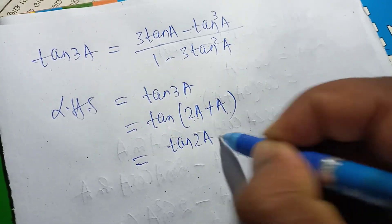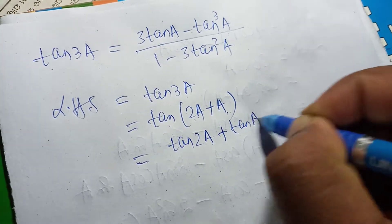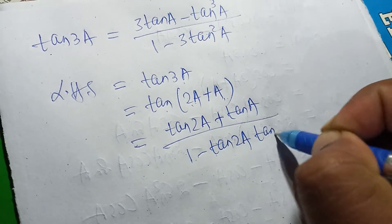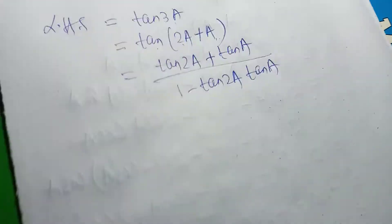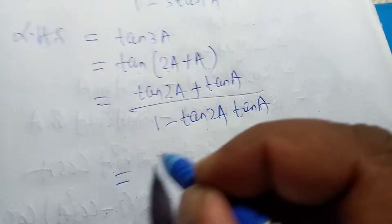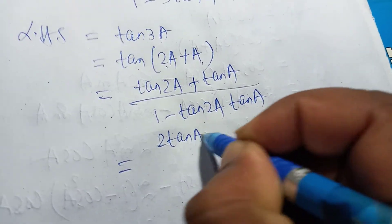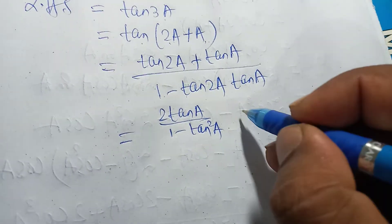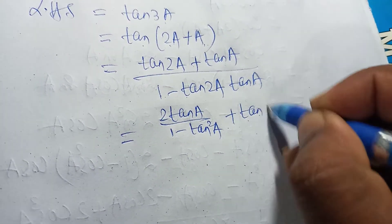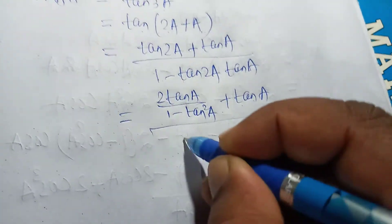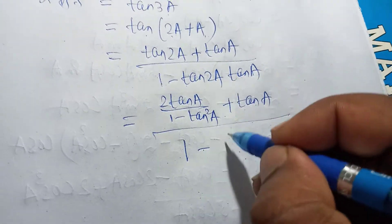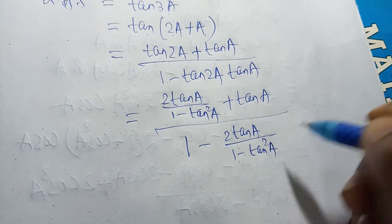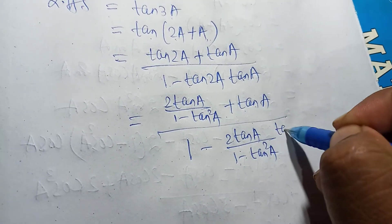So, this becomes tan 2a plus tan a, divided by 1 minus tan 2a into tan a. Now, substituting the formula for tan 2a, which is 2 tan a divided by 1 minus tan square a, we get: 2 tan a over 1 minus tan square a, plus tan a, all divided by 1 minus 2 tan a over 1 minus tan square a, into tan a.